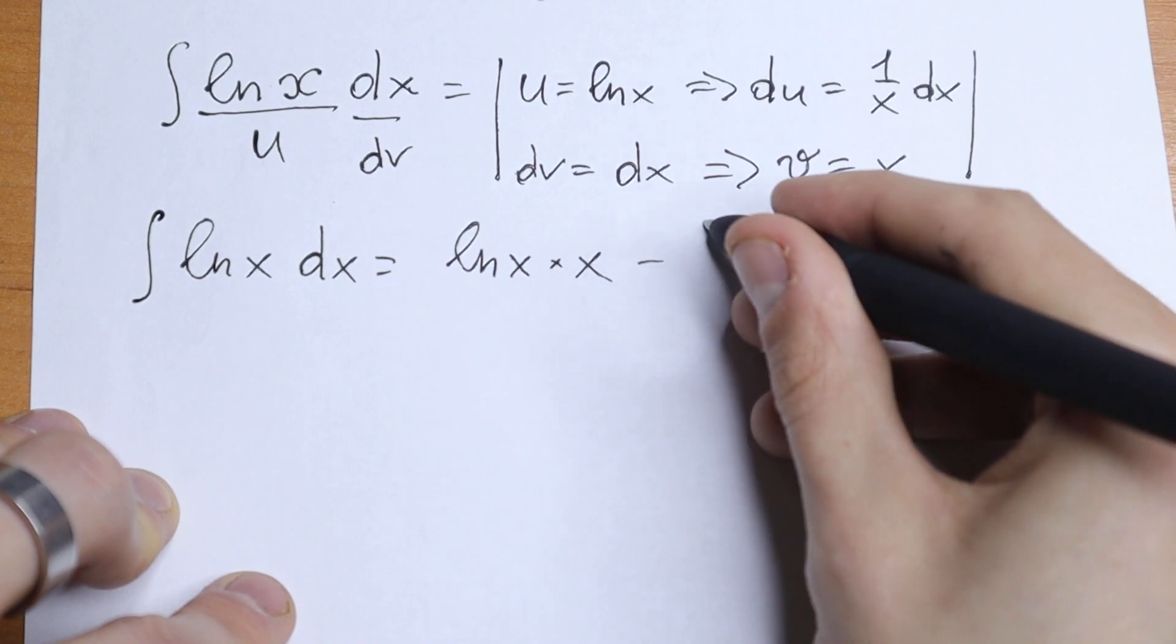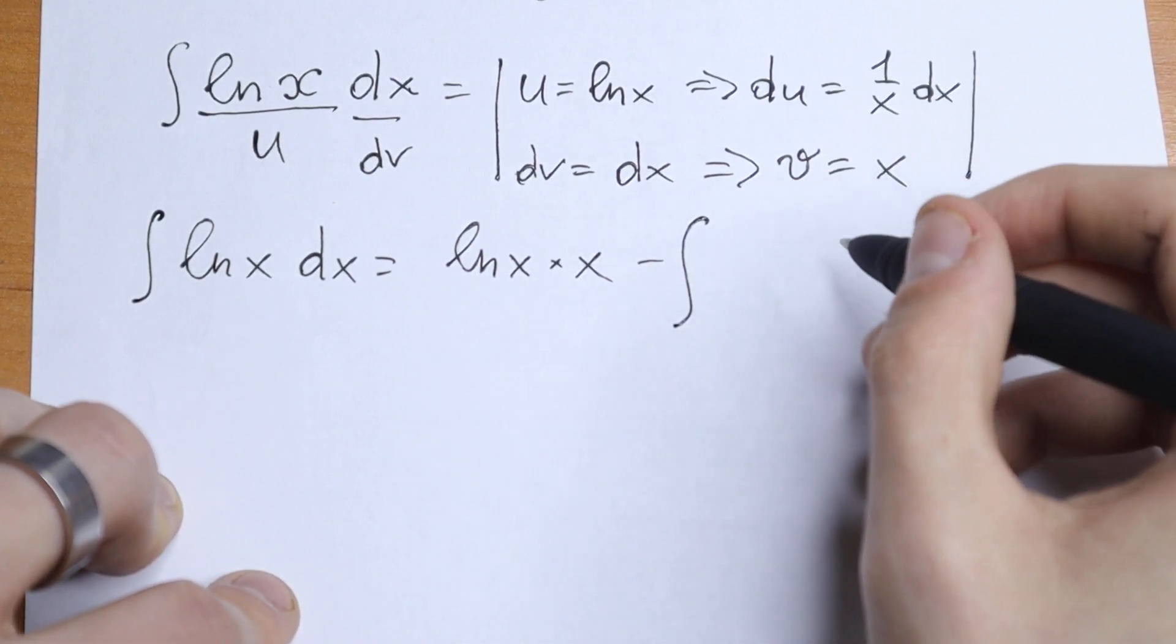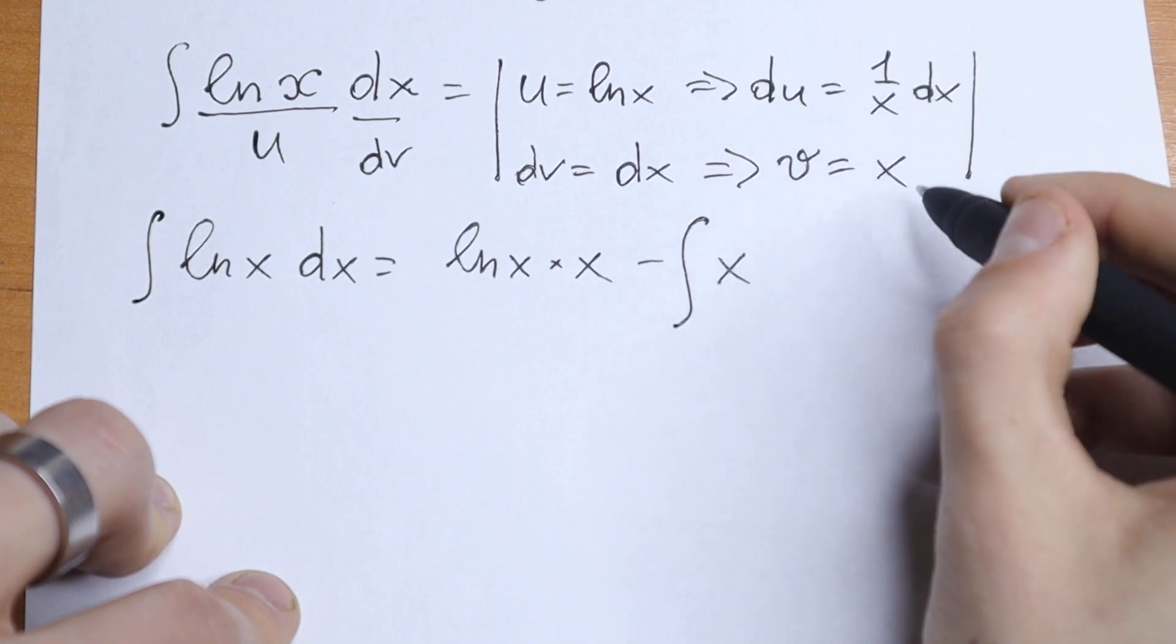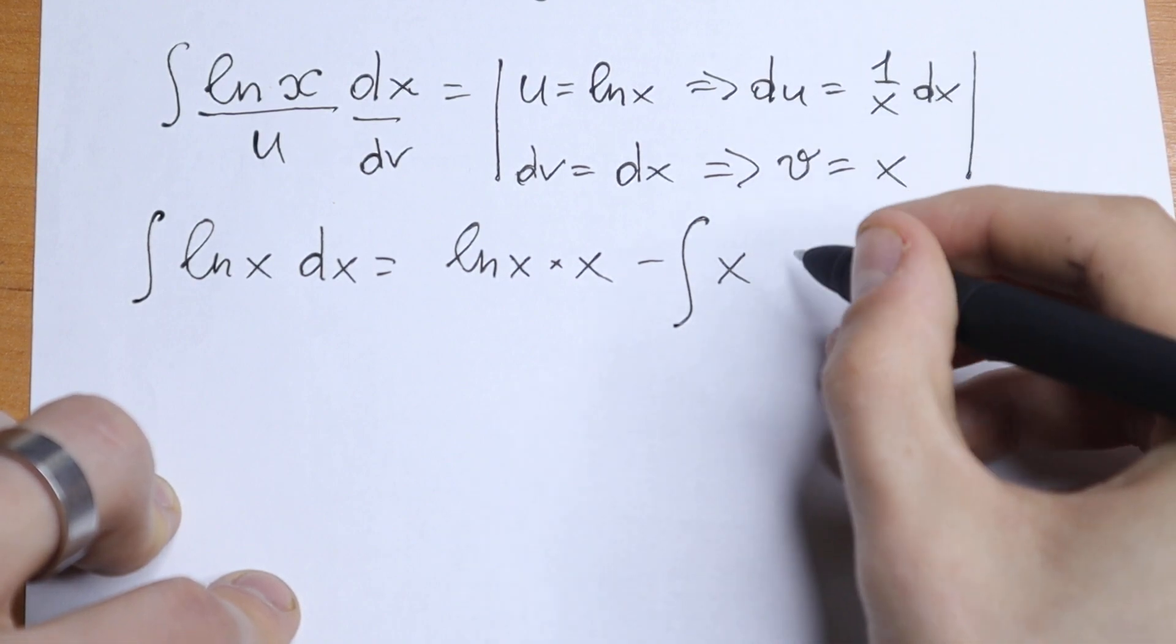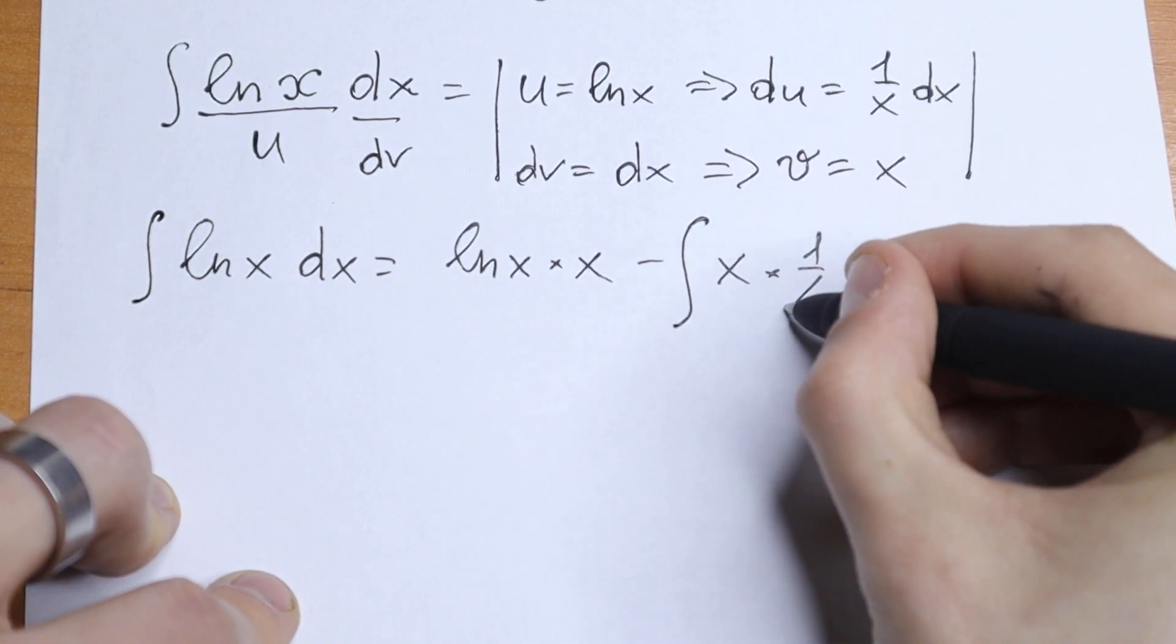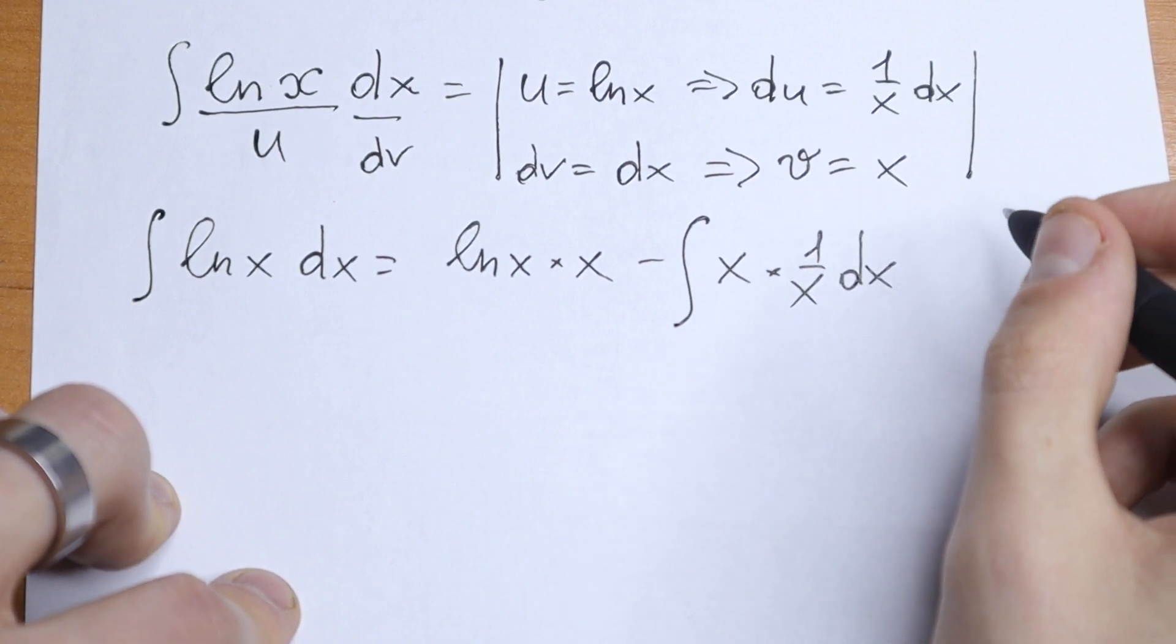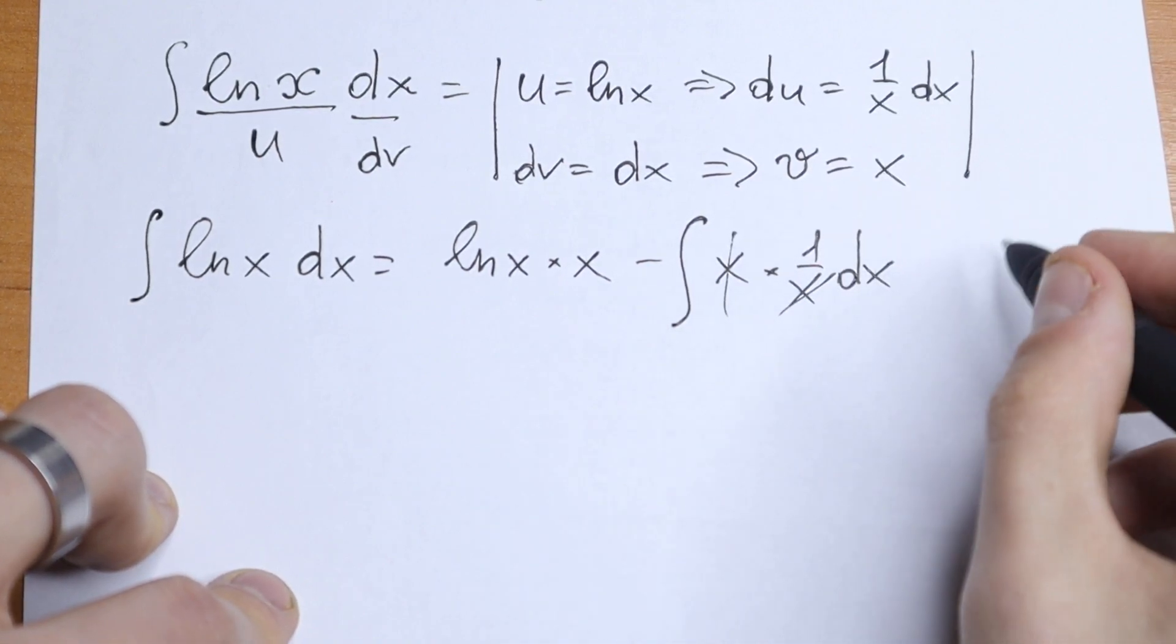and minus integral v times du. So v times du, du equals 1 over x times dx, times 1 over x times dx. And take a look, it's a really good moment, because we cancel this x and this x.